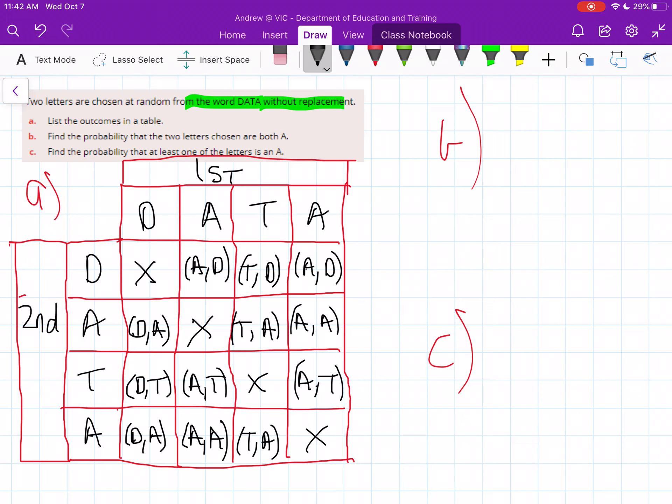So this is how you list outcomes into a table. You have all your options up the top and along the side, and then just match up all the different options that can happen. But just remember, without replacement means if you select it first, you can't use it second. And you'll see that by all the crosses that are there. So now we can use this to find probabilities.